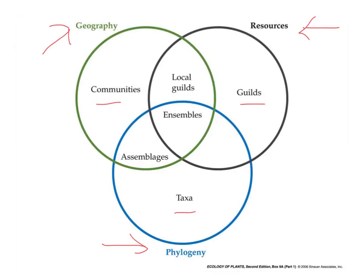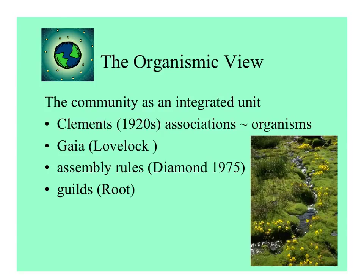Communities occur all over the world. Where communities, guilds, and taxa intersect, we get ensembles, which are kind of like associations. Some of the earliest thinking about community ecology came from plant ecologists. Some of the early ecologists looked at a plant community almost like an organism itself — an integrated unit with each of the species as kind of like one of the organs or tissues.